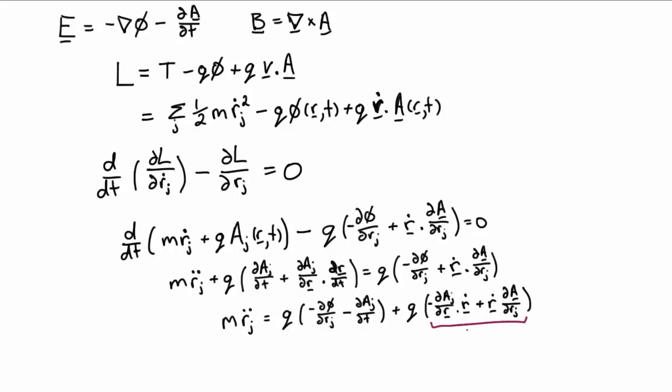Now this bit here has a very simple form. It's r dot cross curl of A, that's the jth component of that, which you can verify component by component, or else just look up your vector identities. And of course curl of A is just our magnetic field B, and this here is of course just our electric field E.